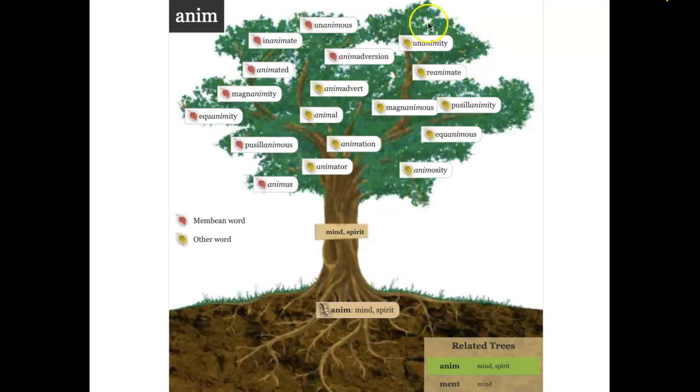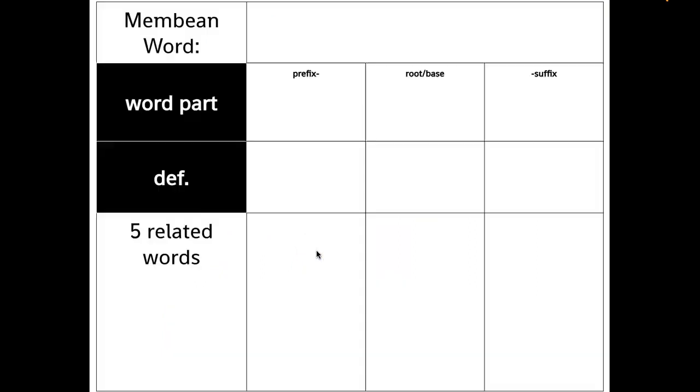And when I click that, it takes me to a word tree that has all kinds of different words. Some of them are Membean words, some are not, but they tell me some other words that have that same word part in them.